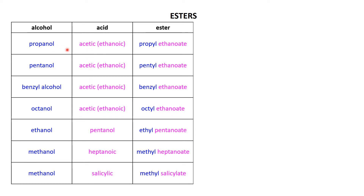React acetic anhydride with propanol and you make propylethanoate; with pentanol you make pentylethanoate; with benzyl alcohol, benzylethanoate; and so on, all the way down to salicylic acid — a benzene ring that has an acid group and a phenol group next to each other — which you react with methanol to make methyl salicylate.